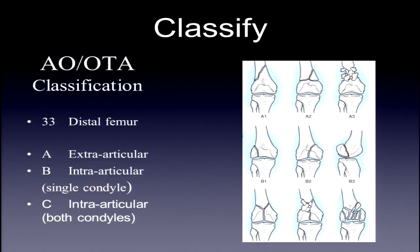Once you have your studies, you want to classify the fracture. The AO/OTA classification — Bone 33, distal femur — is quite useful. Type A fractures are extra-articular; type B are intra-articular single condylar fractures; and type C involves both condyles. Going from left to right, the complexity of the fracture increases. This classification helps you plan surgery and predict outcomes.